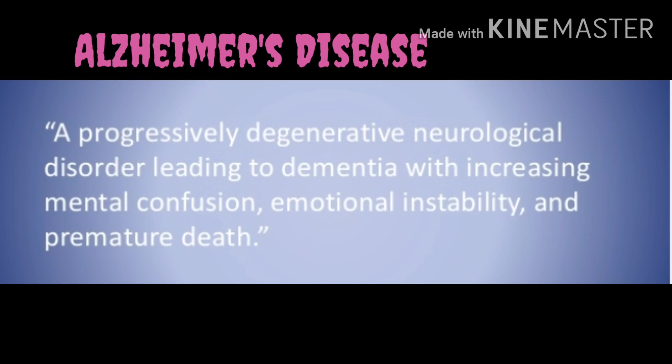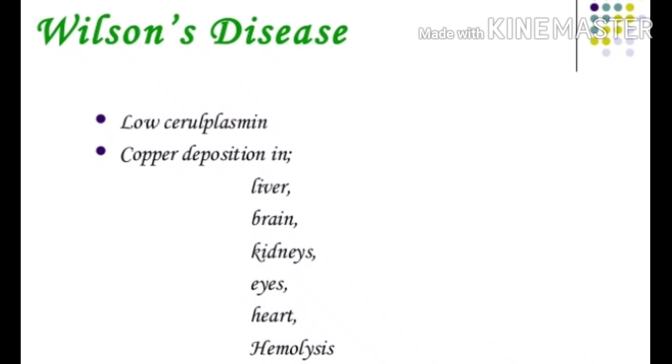Alzheimer's disease is a progressively degenerative neurologic disorder leading to dementia, memory-related problems, increasing mental confusion, emotional instability, and premature death. Wilson's disease is an autosomal recessive disorder characterized by low ceruloplasmin — a major copper-carrying protein found in the blood.